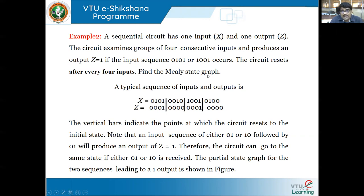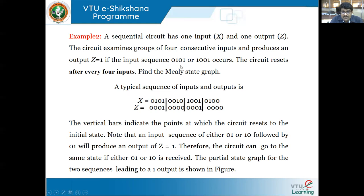Specifically, the problem asks us to find the Mealy state graph. According to the first guideline, we specify the input sequence and when exactly the output becomes 1. A typical input sequence X is taken as an example — any sequence may be used. The vertical bar indicates that the circuit resets after every four inputs. For inputs 0101, one of the sequences has occurred, so Z becomes 1 at the end of that sequence.